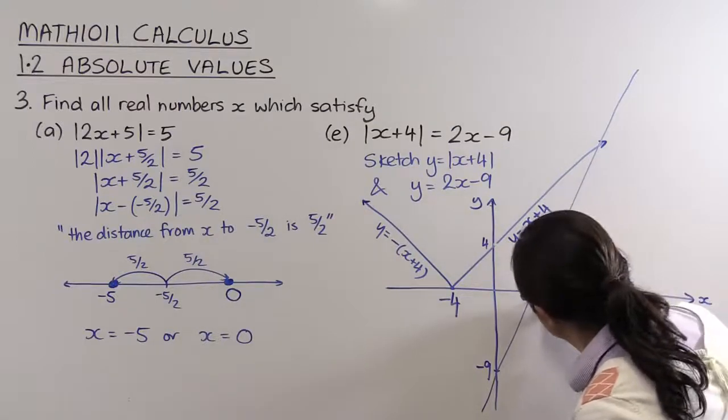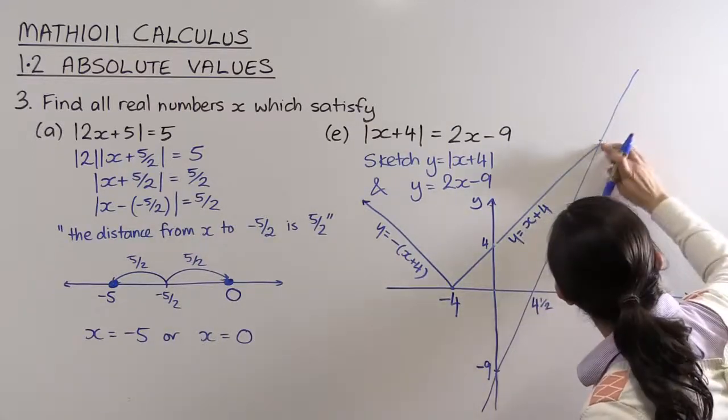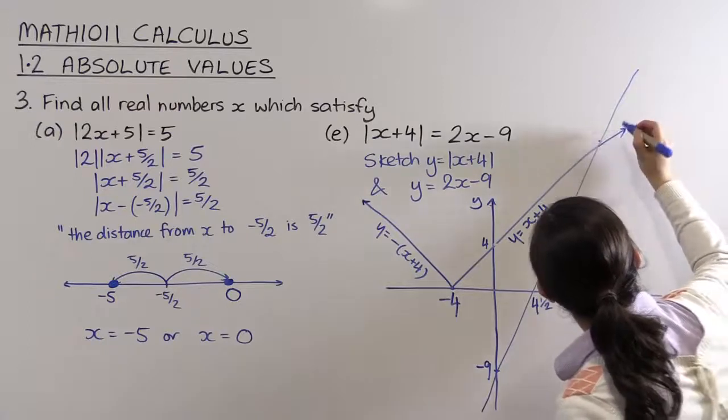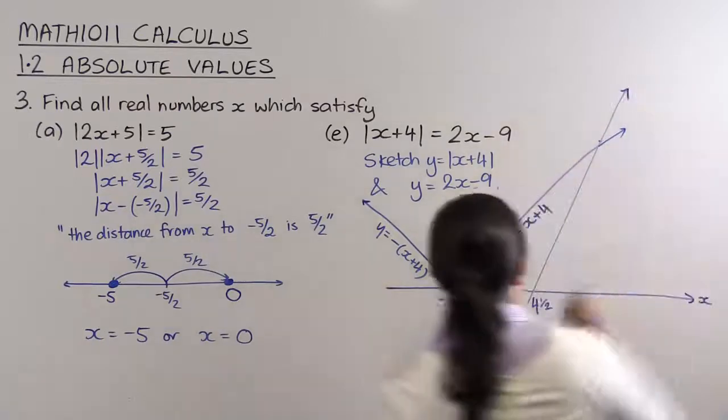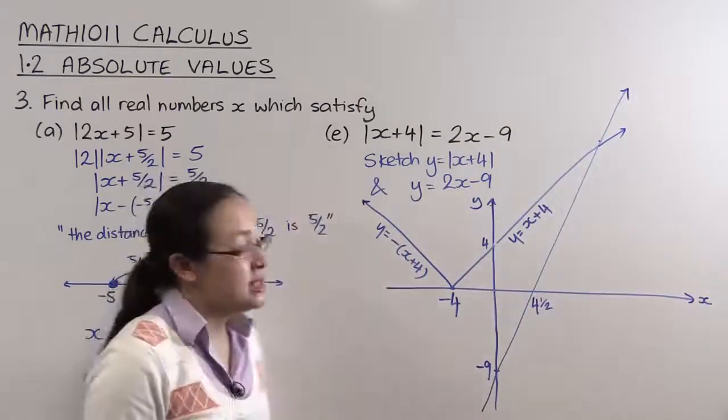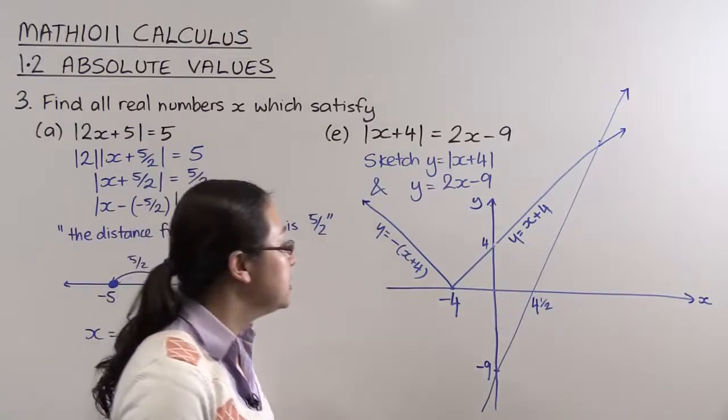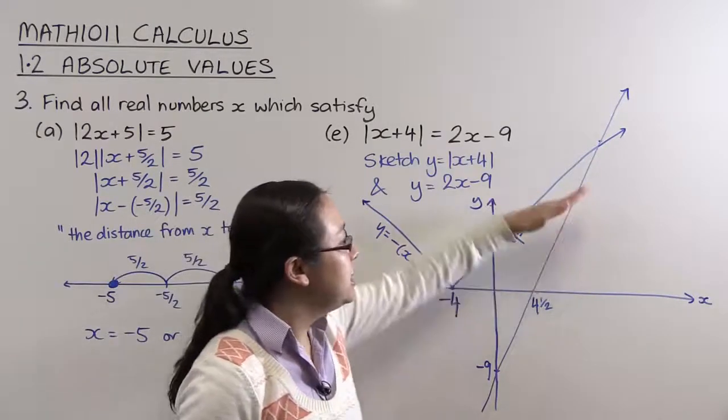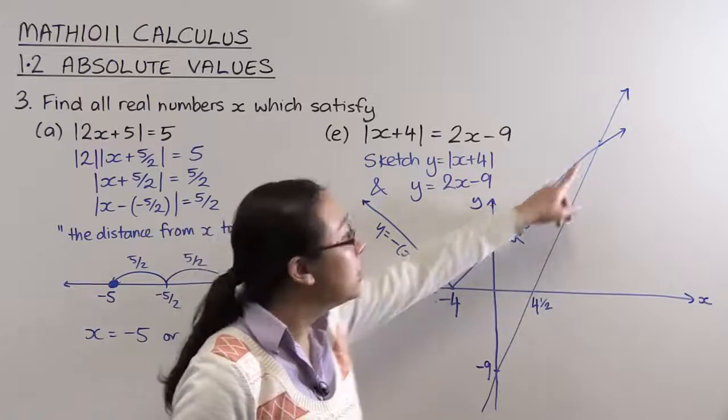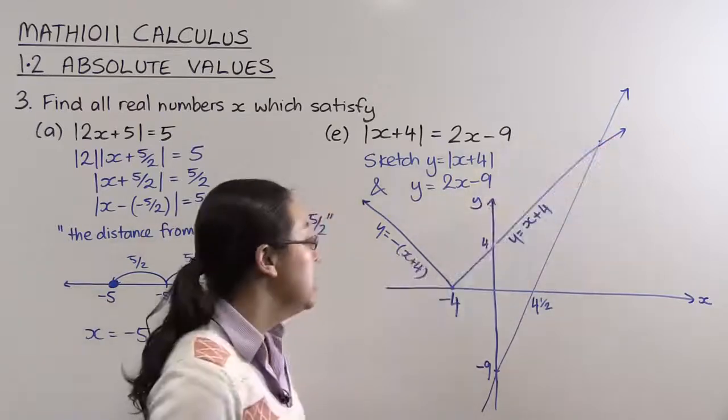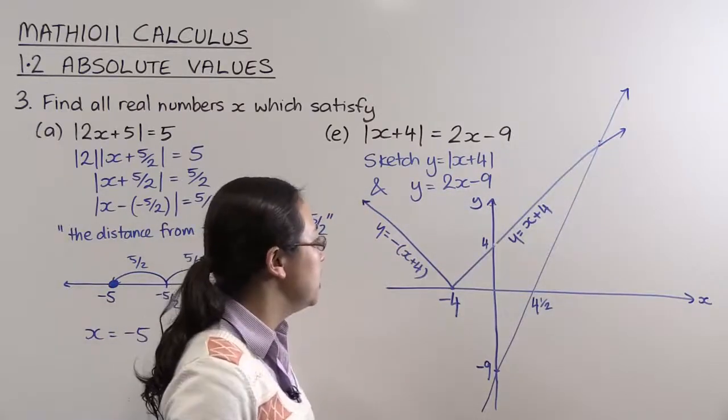In fact, it's got an x-intercept of 4 and a half. We're not worrying too much about scale. The important thing is that this line is steeper than this line. So you can tell that they're going to intersect and things should be approximately correct.